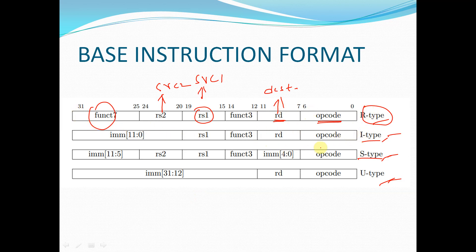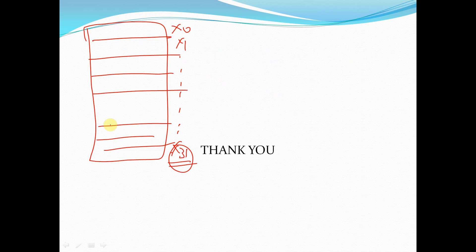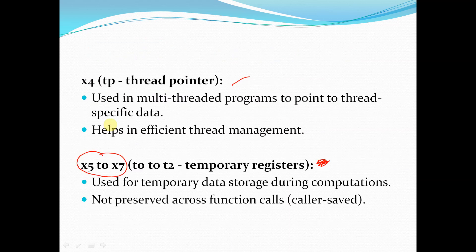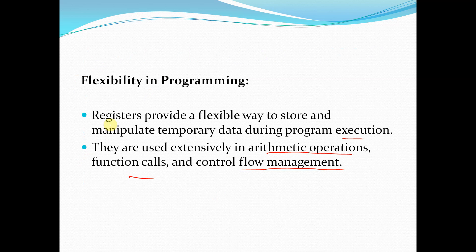In the next session we will see what opcode, funct3, and funct7 mean. For the I-type instruction, the format is: imm (immediate value), rs1, funct3, rd, and opcode. In detail we will cover in our next session what each field — opcode, rd, funct3, rs1, rs2, funct7 — means.